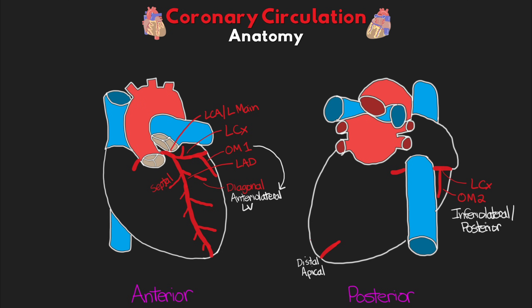Typically the left coronary artery bifurcates into two branches, but in some small percentage of the population, a third branch comes off between the circumflex and the LAD. This branch is called the ramus, and it basically serves the same purpose as the high obtuse marginal or high diagonal branches, perfusing the anterior lateral wall.